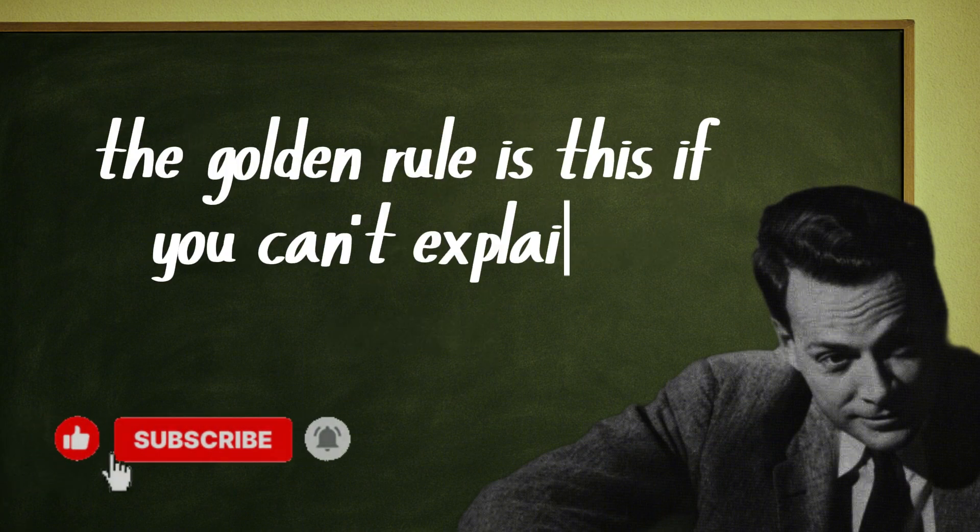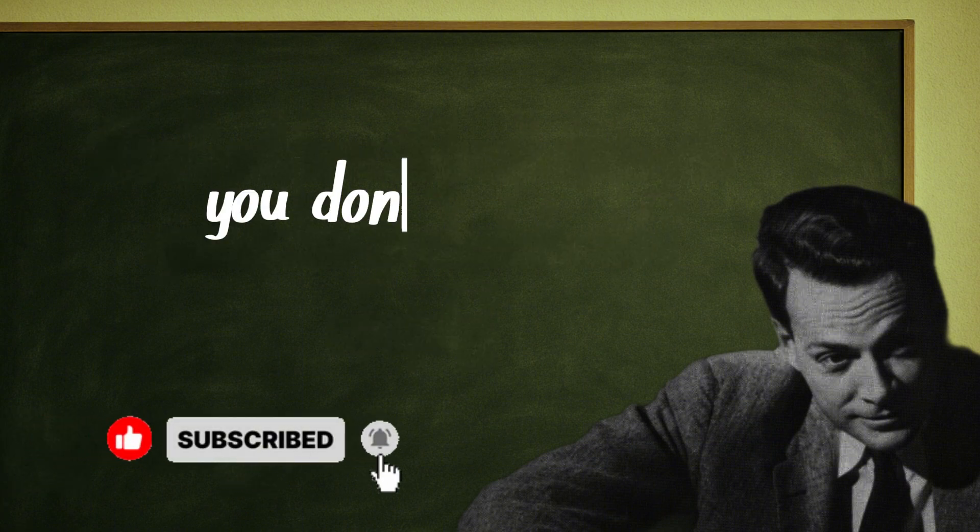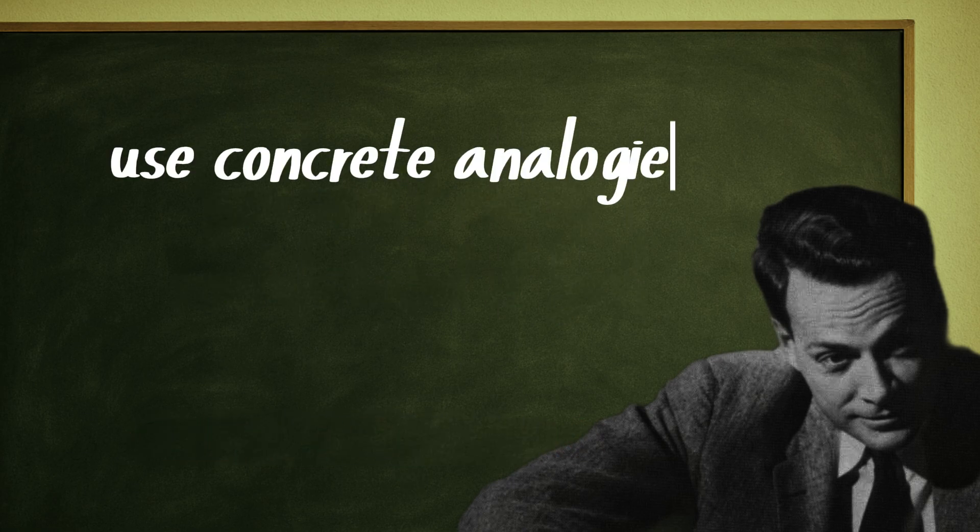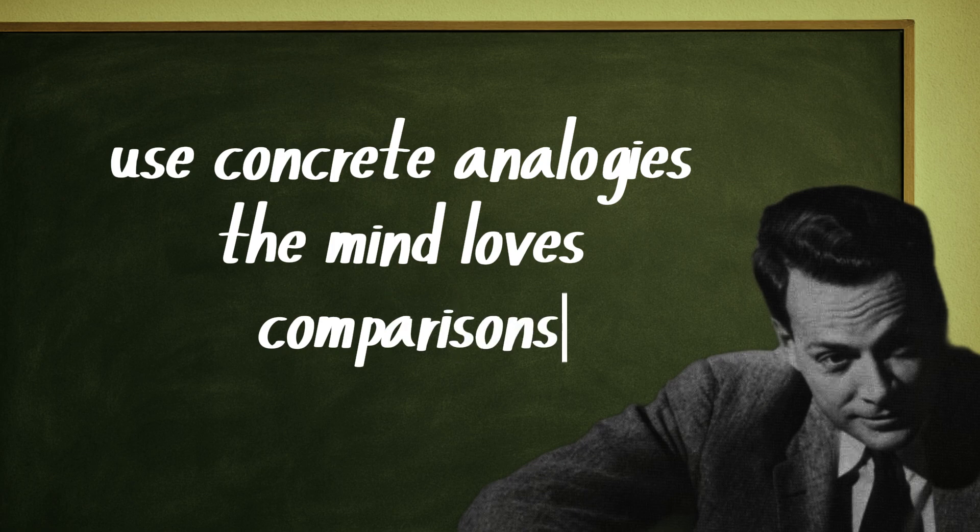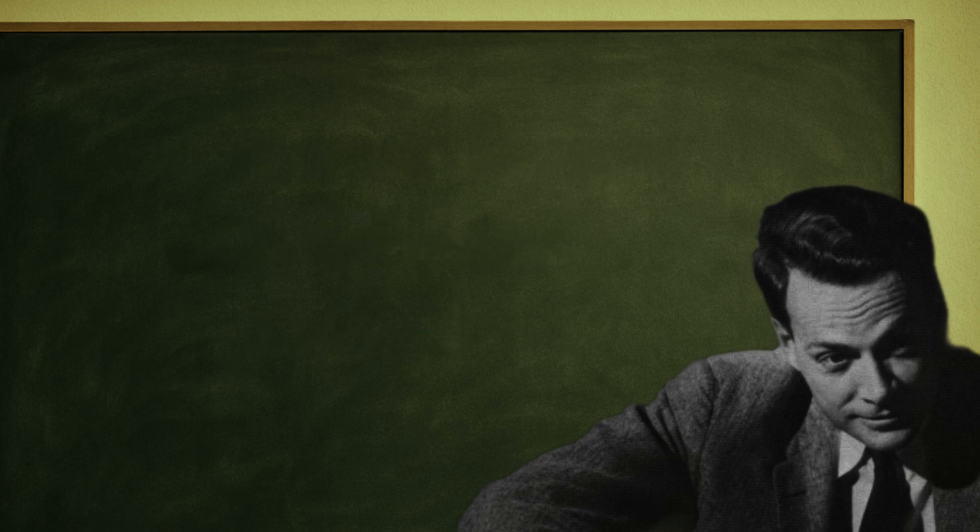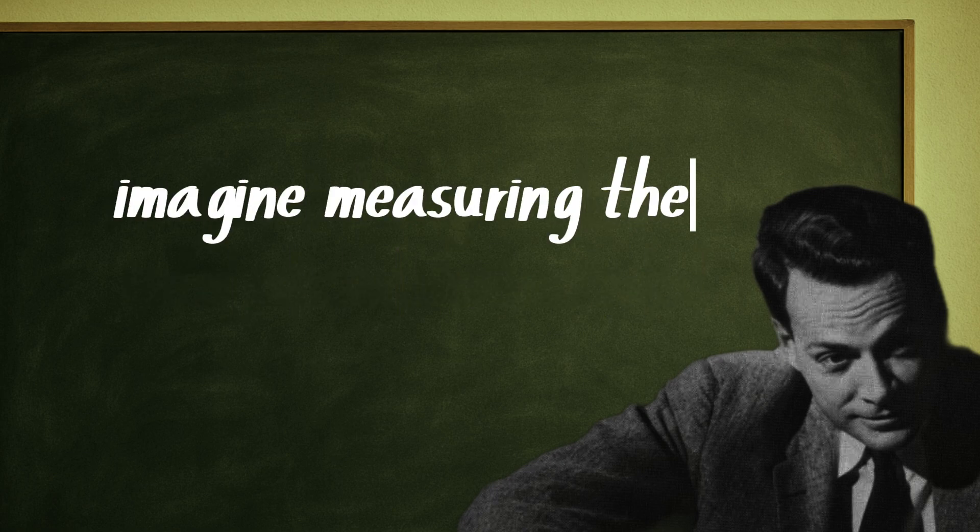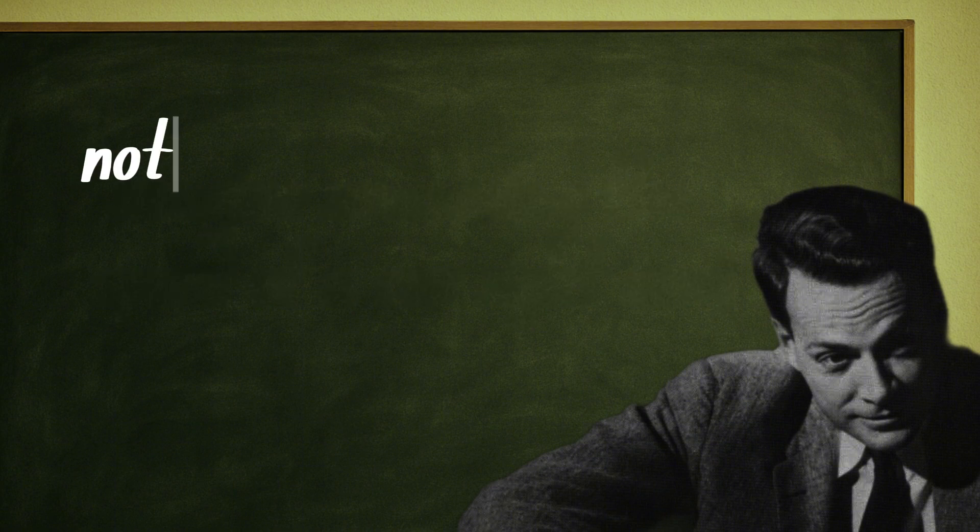The golden rule is this: if you can't explain it simply, you don't really understand it yet. Use concrete analogies. The mind loves comparisons. Fractions: imagine slicing a pizza into pieces.